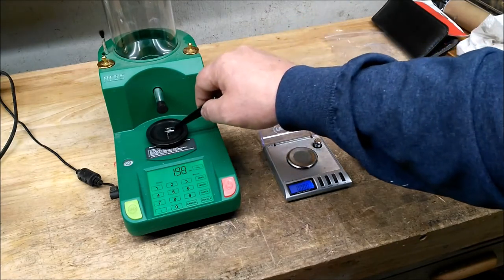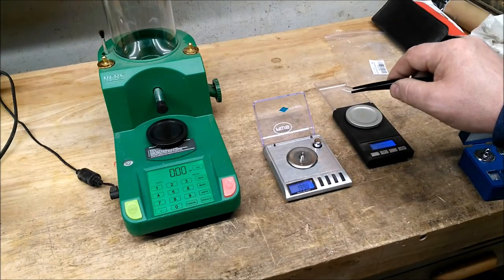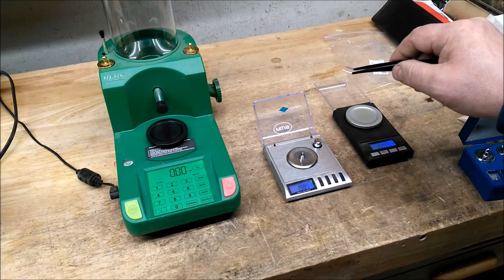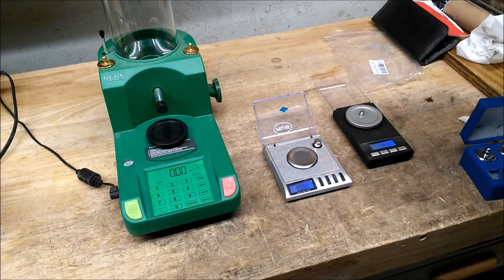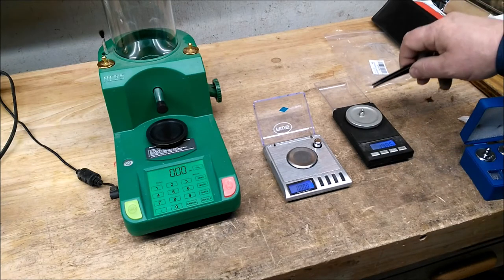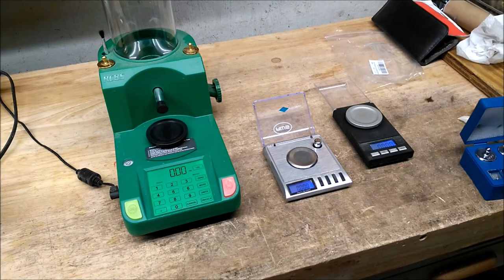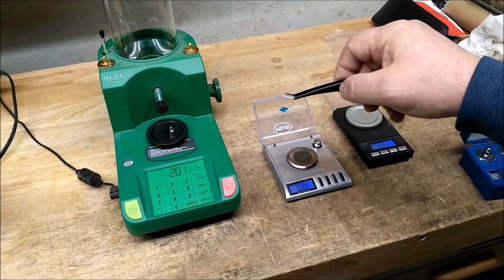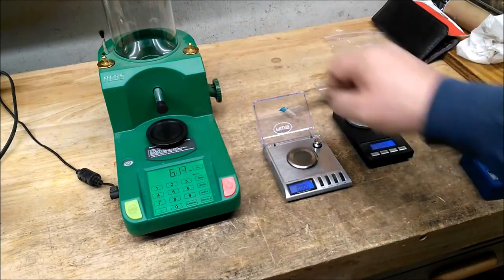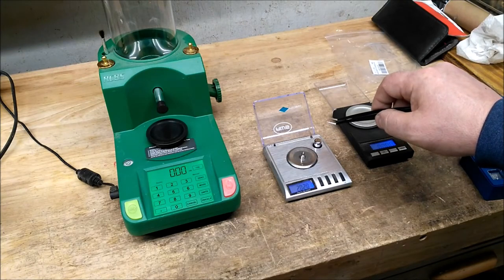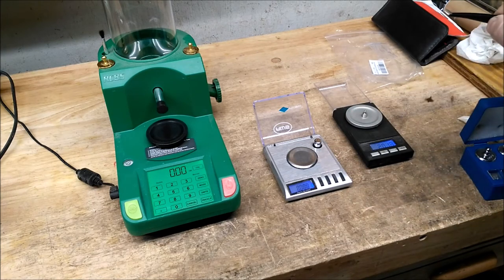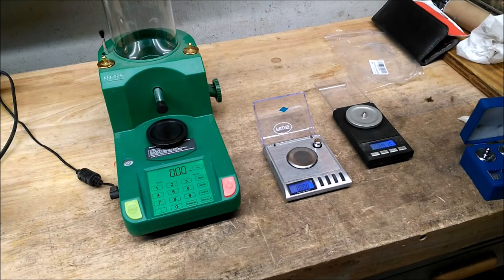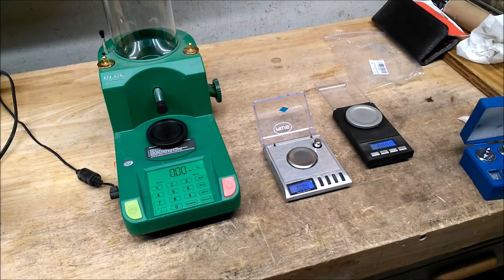1.98. 1.988, 1.985. Another 20 here, see what this is. 2.01. 2.02, 2.019, 2.016. One heavy, one light.